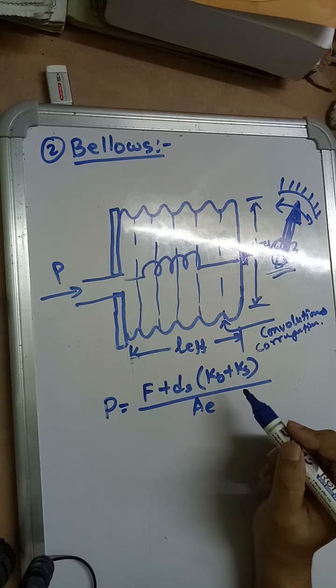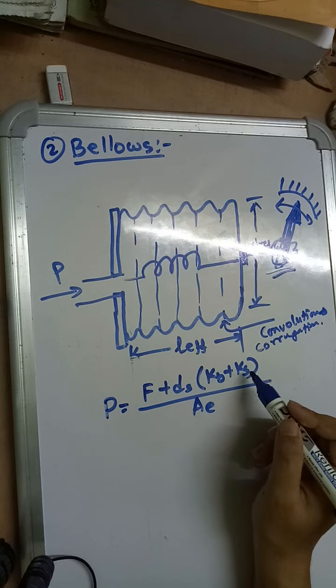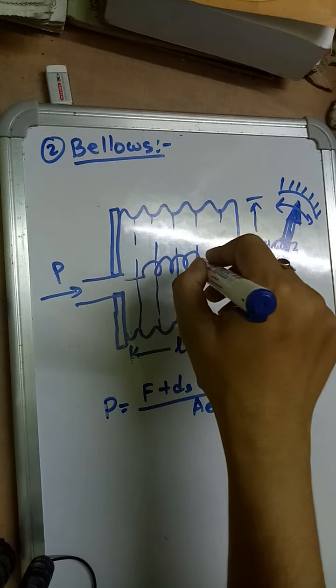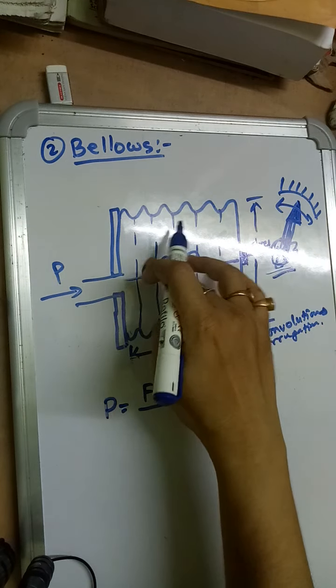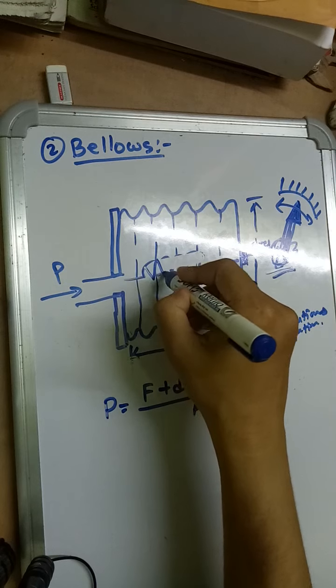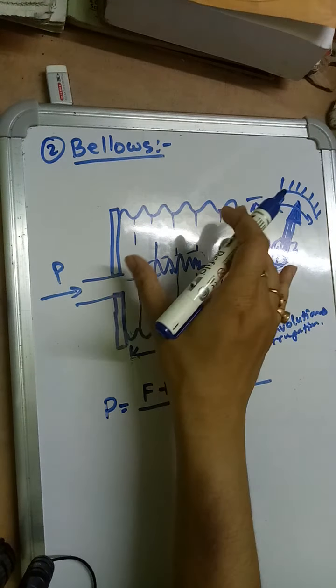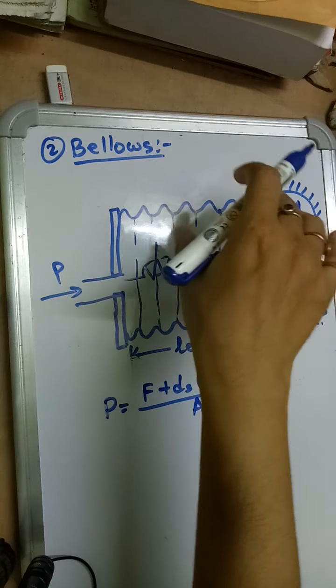Now you just understand: k_s is due directly to this spring. You may draw this spring in this way also. And k_b is its own property due to the bellows property - the restoring force it can apply by its own.